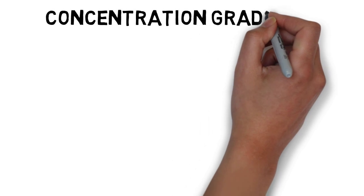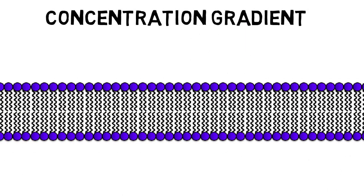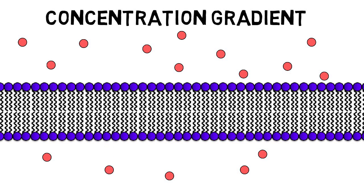The second factor is the molecule's concentration gradient. At any given time, a particular molecule will be present at different concentrations on both sides of the cell membrane. By the laws of diffusion, the molecule would naturally migrate from a region of higher concentration to a region of lower concentration with time.